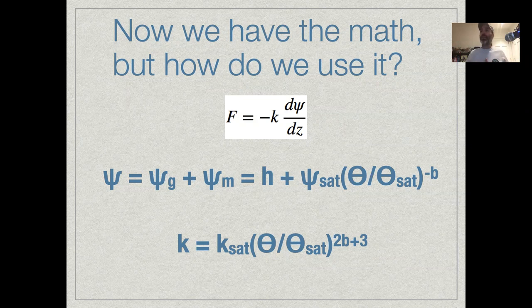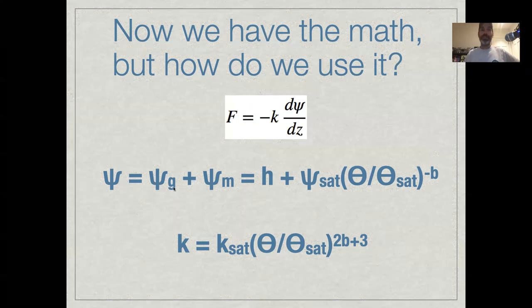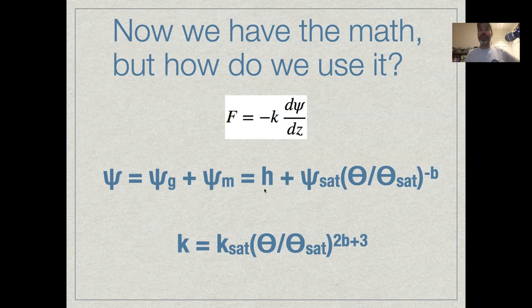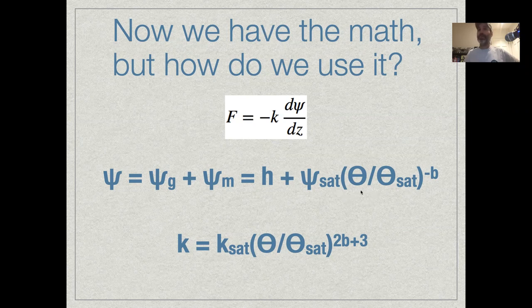In the last video, we talked about Darcy's law, this flux equation that says the flux of moisture through a soil depends on its conductivity and the vertical gradient and water potential. We learned about what water potential is in terms of a gravitational component and a matrix component, as well as potentially a pressure and osmotic component. So we have equations for both those components, a gravitational and a matrix component that vary as a function of soil moisture. We also learned that this soil conductivity varies as a function of soil moisture.